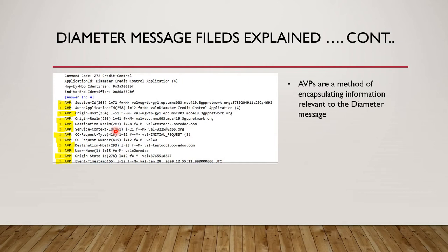The second is auth application ID. This ID is similar to the diameter header application ID — you can see that in application ID it is 'Diameter Credit Control Application', and in auth application ID it is also 'Diameter Credit Control Application'. You might wonder why these are duplicated. The application ID is related to the header and is mandatory by the IETF — it tells what the application ID is. The auth application ID is another identifier telling us for which application this message is applicable.